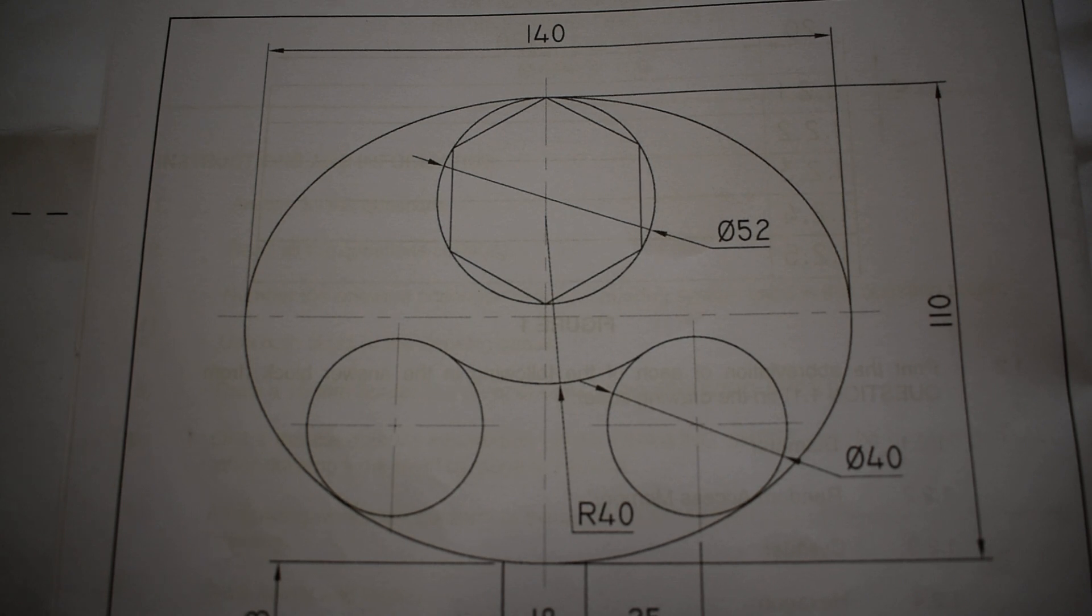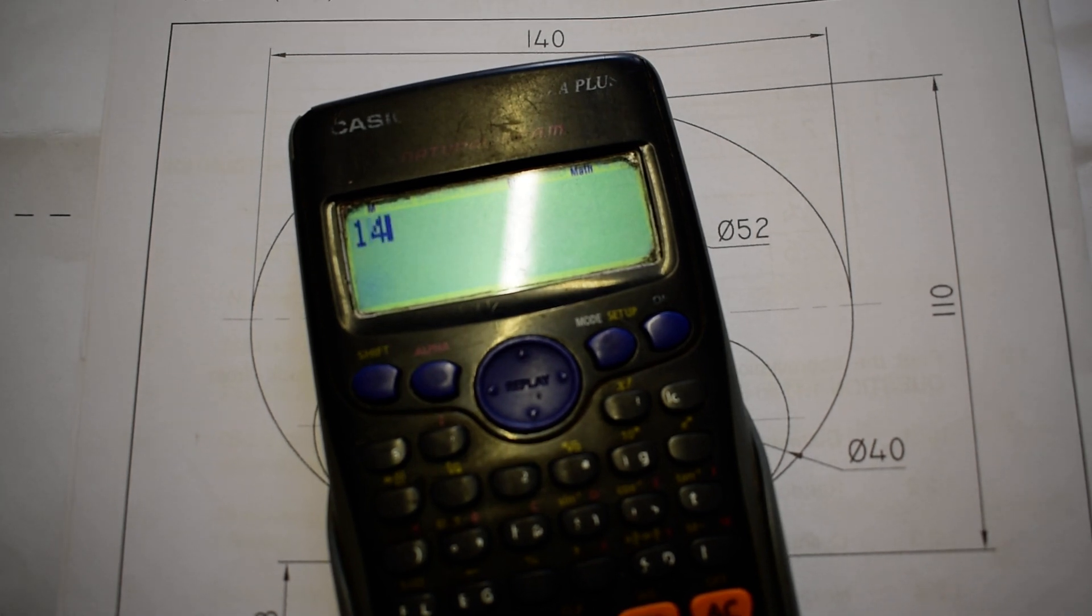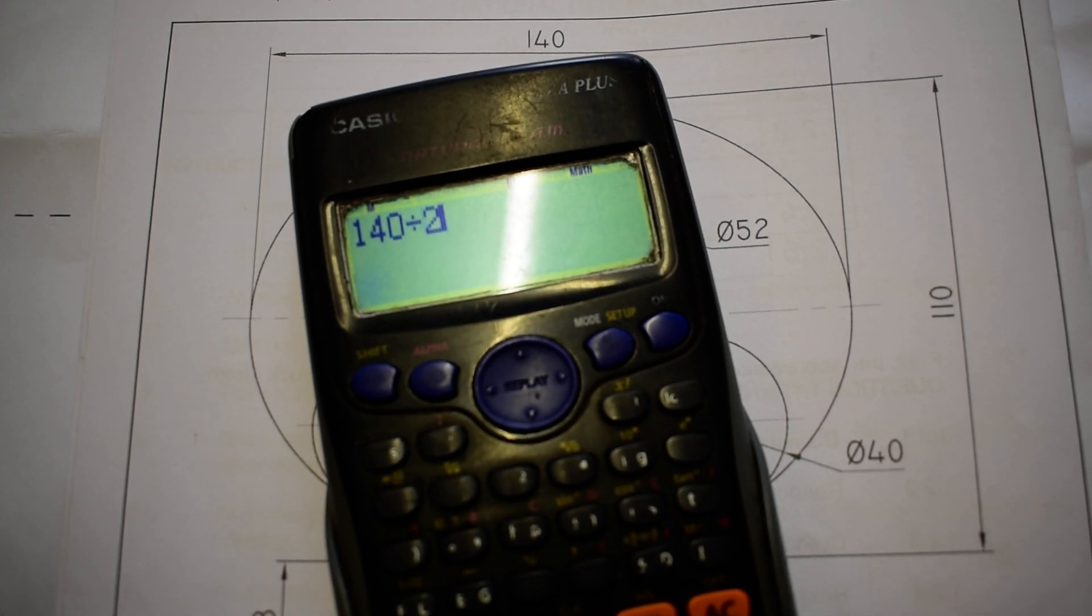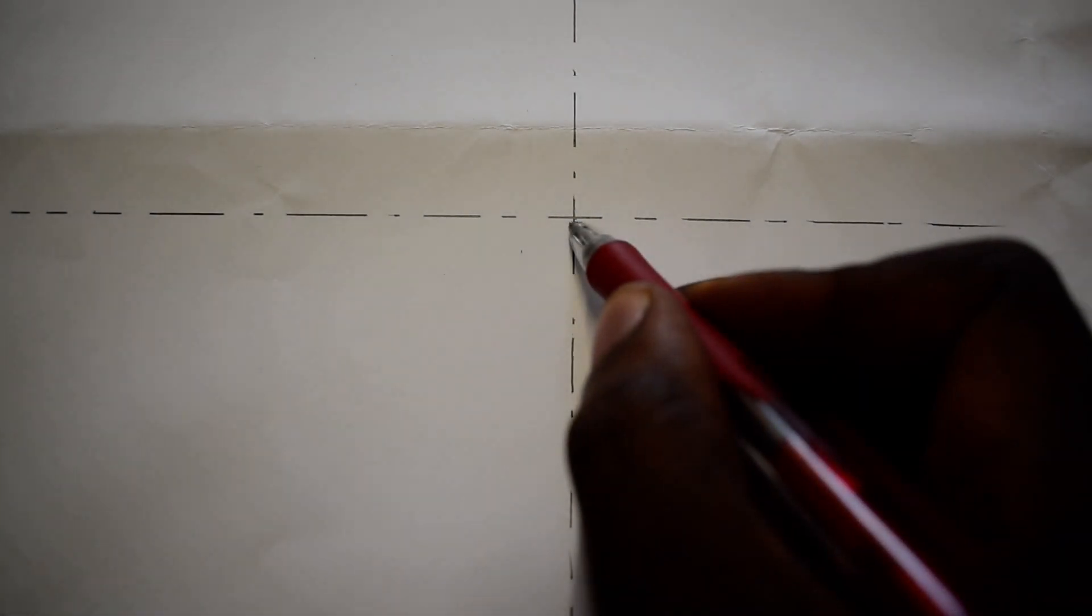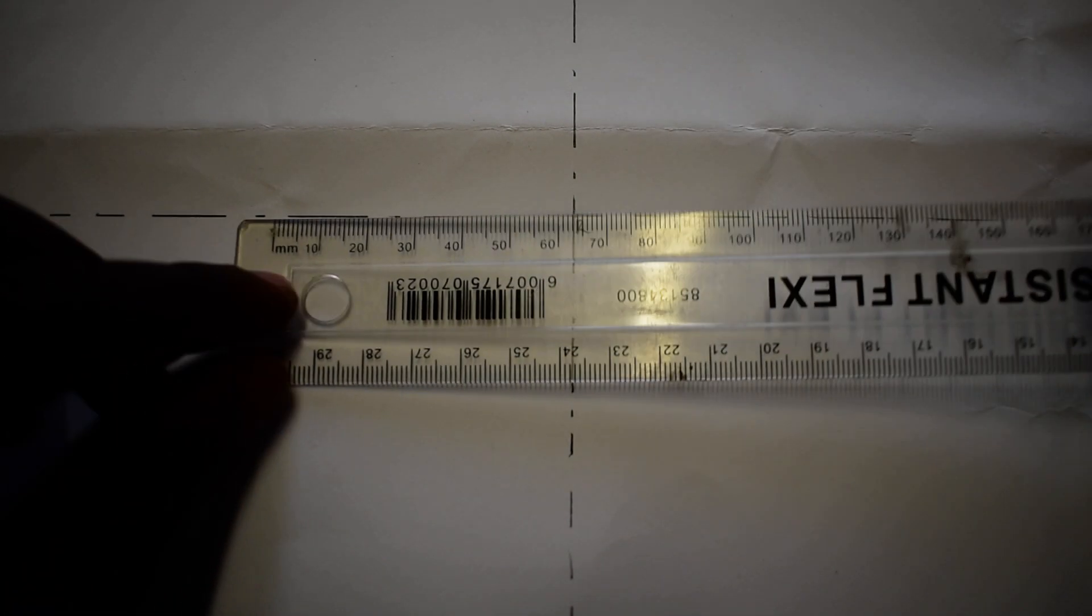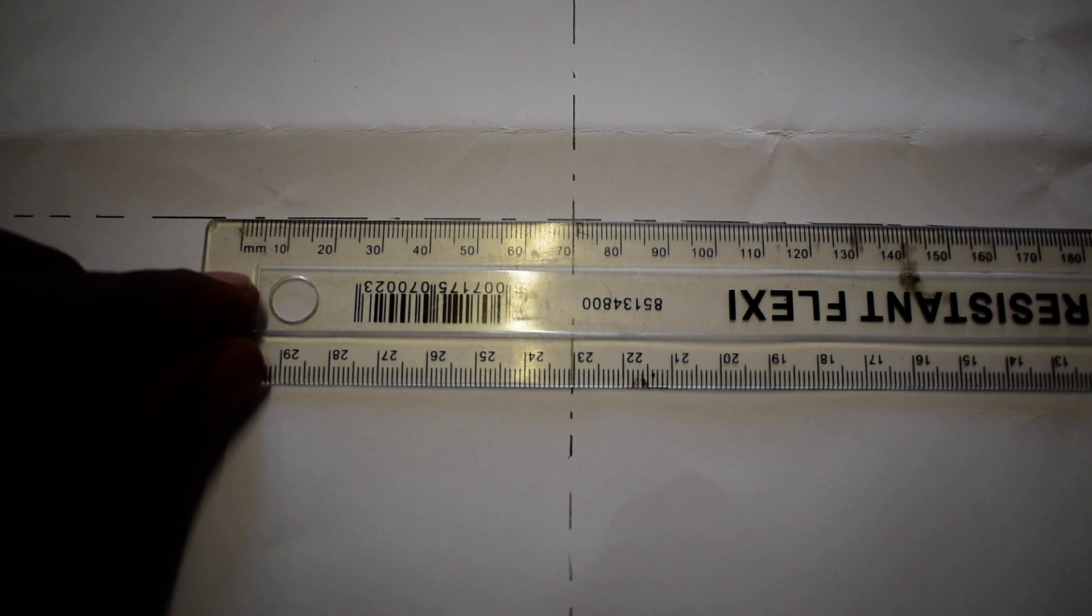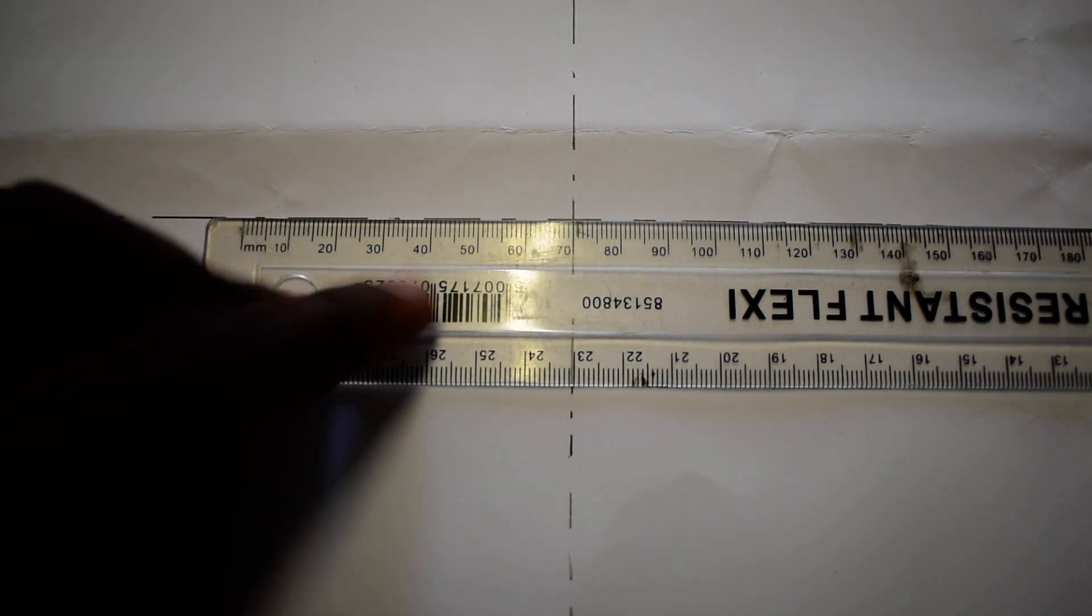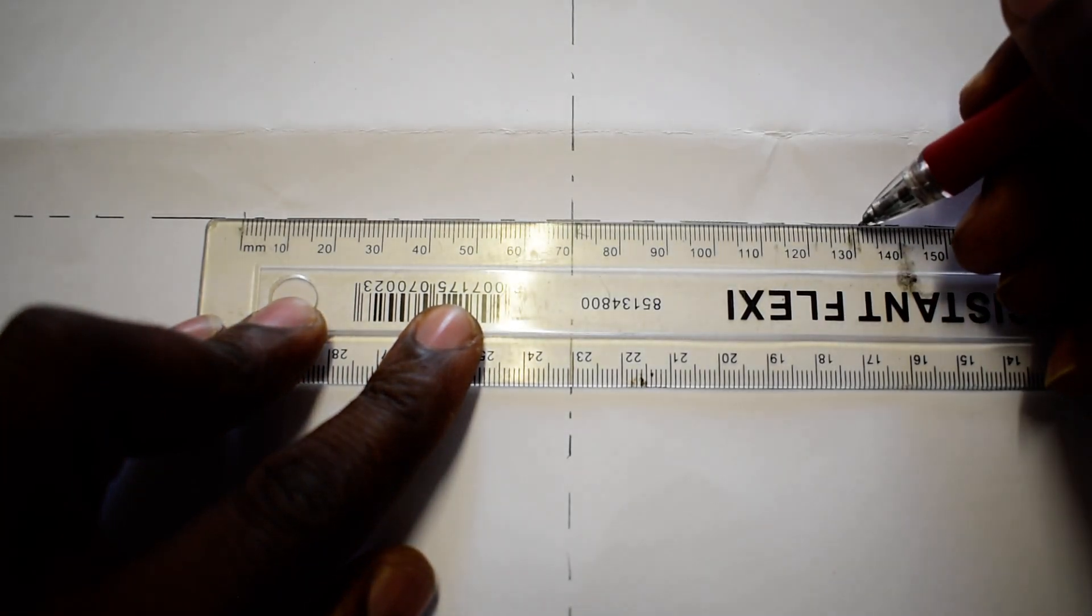Which means I am going to say 140 divided by two, so it's 70 millimeter. So now I am going to measure 70 millimeter from here coming this side, from here coming this side, so that from here till here is 140. So another way, I can just put it at 70 millimeter like this, then I mark it zero and I mark 140.